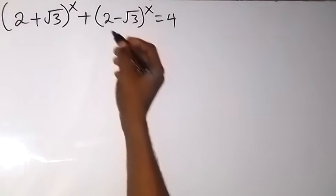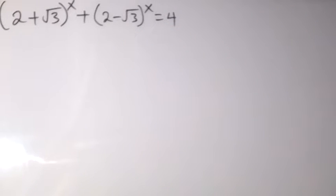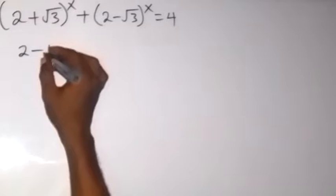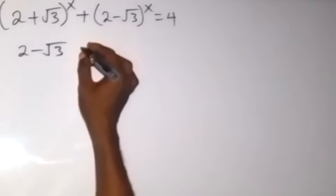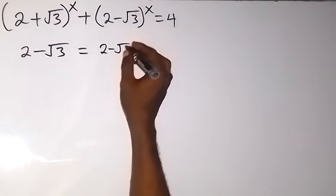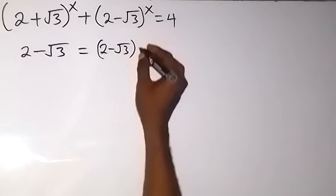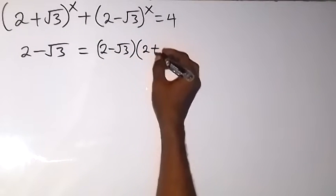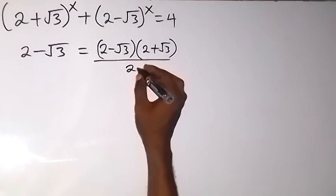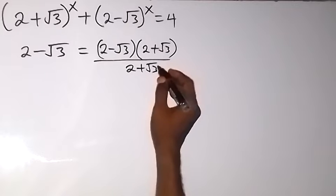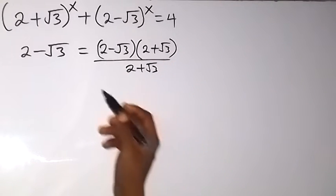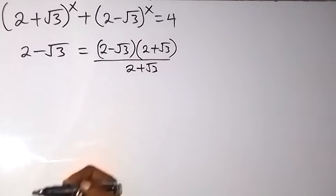Now let's write 2 minus root 3. So we have 2 minus root 3. It can be written again as 2 minus root 3 multiplied by 2 plus root 3, also divided by 2 plus root 3. As you know, 2 plus root 3 can cancel 2 plus root 3, so we are still going to have the same thing as 2 minus root 3.